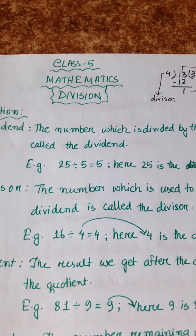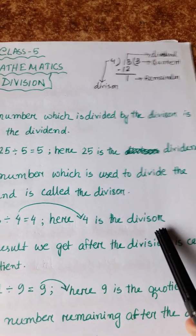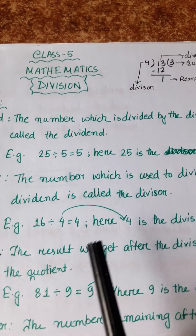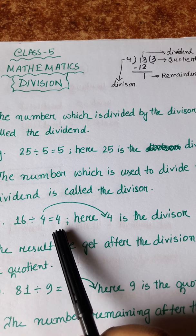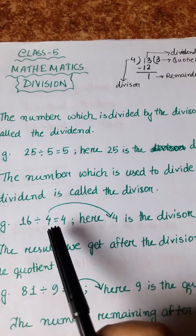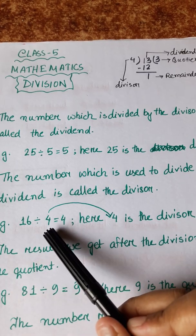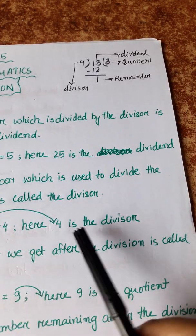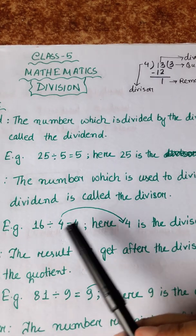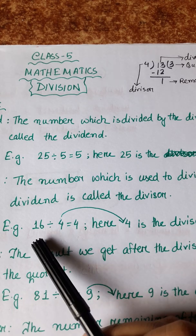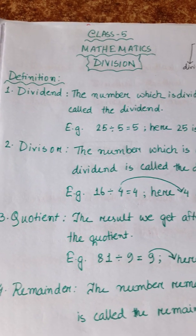For example: 16 divided by 4 is equal to 4. Here, 4 is the divisor. We are dividing 16 by 4, so 4 is the divisor. The number we use to divide 16 is the divisor, therefore 4 is the divisor.